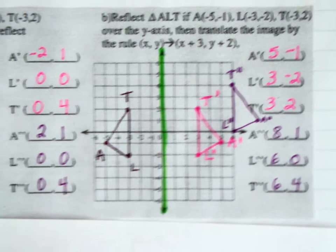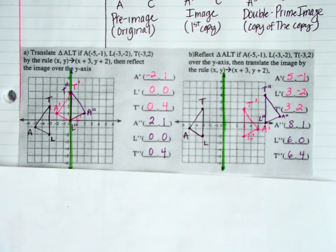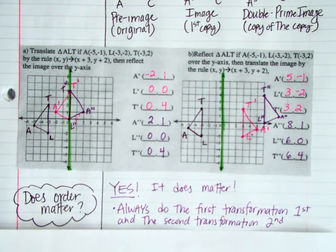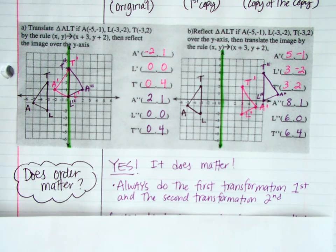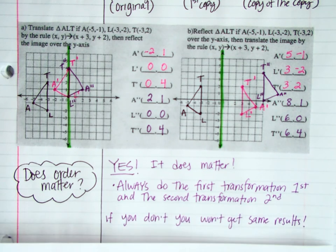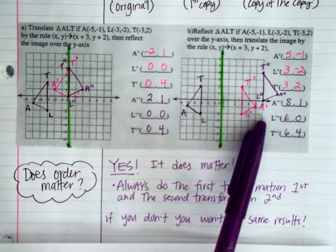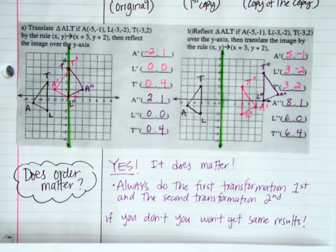As you can see, we have a substantial difference in what we got by reversing the order of those transformations. So the big question is: does it matter if I switch the order? The answer is yes, it does matter. If you do the second transformation first, you're going to get the wrong result. Always do the first transformation first and the second transformation second, because if you don't, you won't get the same results, as you saw here. I hope this gave you a better understanding of how to graph composite transformations.